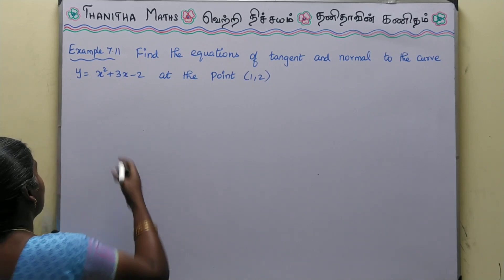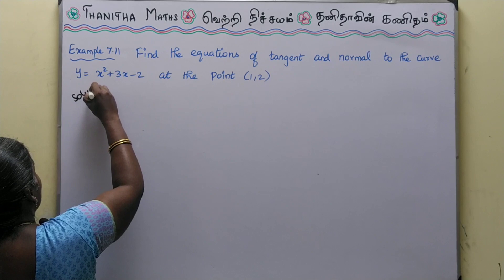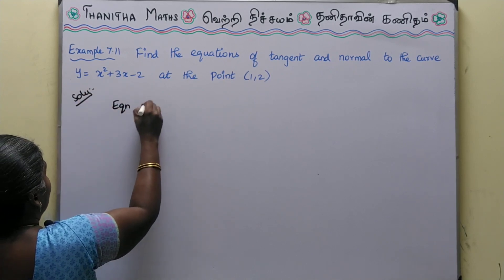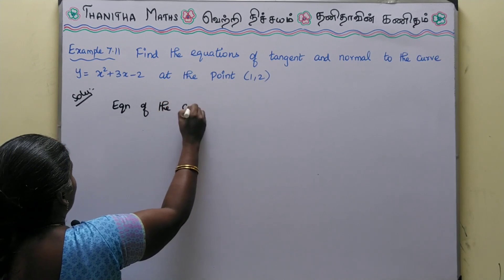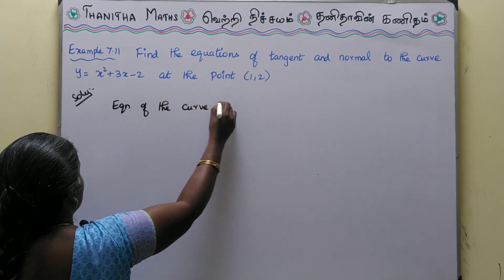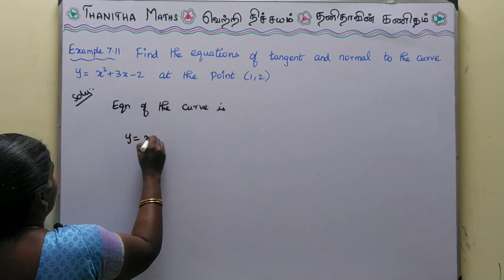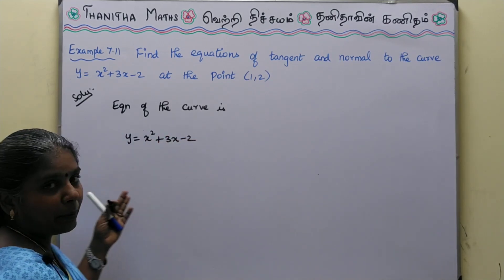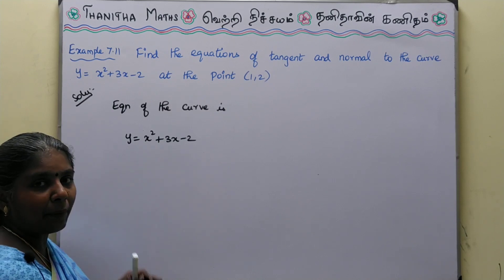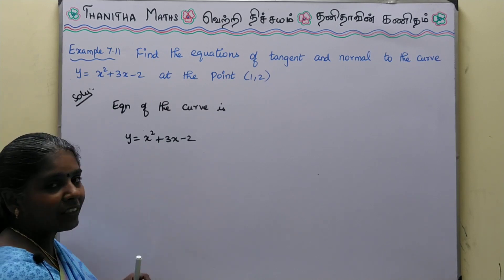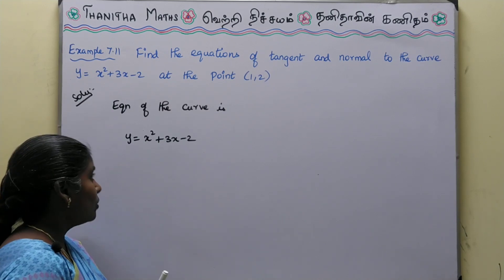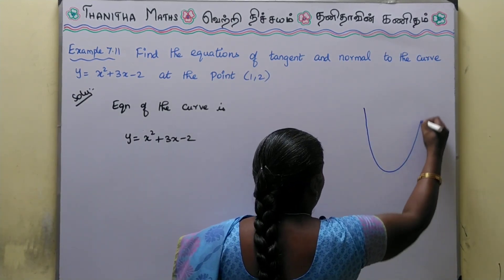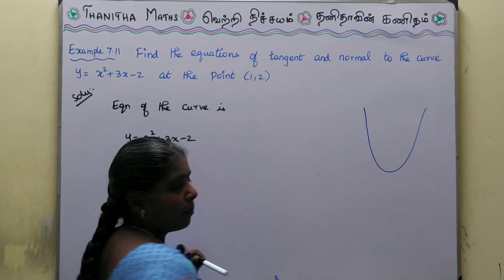The equation of the curve is y = x² + 3x - 2. We know that this is a quadratic equation, so it is a parabola, and since x² has a positive coefficient it is open upward. You can just draw a rough diagram using the standard vertex form.